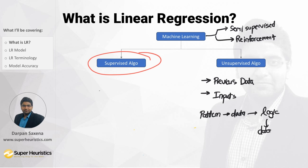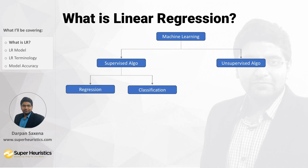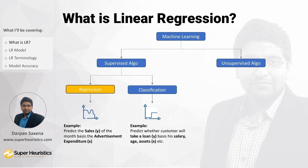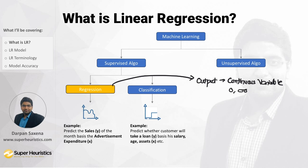In this video I will focus on supervised algorithms, and we will speak about unsupervised algorithms in future videos. Within supervised algorithms we have two categories: regression and classification. In regression, the output variable is always a continuous variable — its value can be anything from zero to infinity. In classification, the output variable is discrete, meaning it can hold only a specific number of values, like two, three, or four.